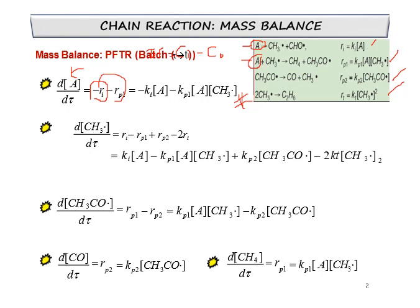Next, perform the mass balance for species CH3 radical. The way to write it is: differentiation of concentration of CH3 radical over differentiation of space time. Looking at CH3 radical, it appears in the initiation step, propagation one, propagation two, and also termination — all steps.